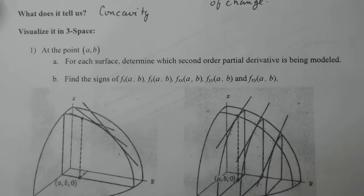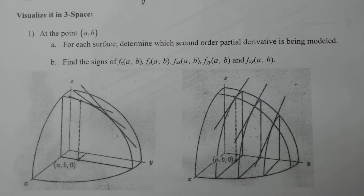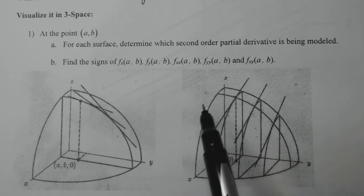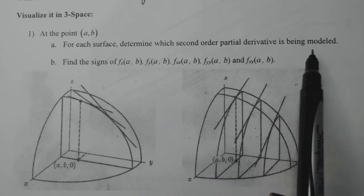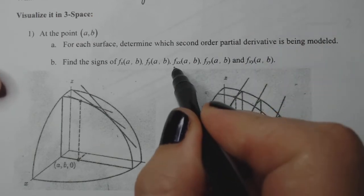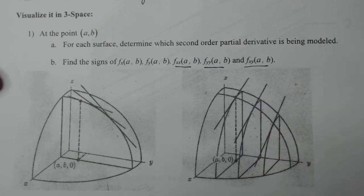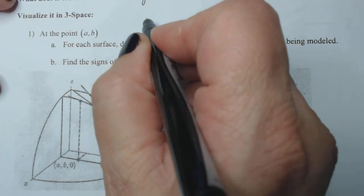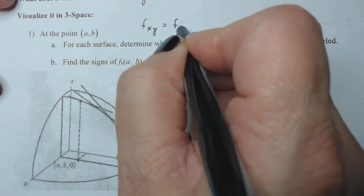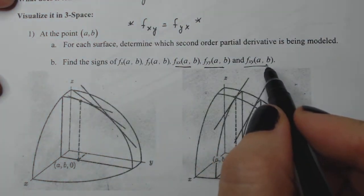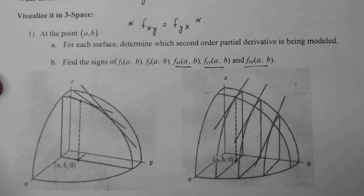Here we have four pictures of second partial derivatives. At each of these points a, b, we want to determine which second-order partial derivative is being modeled. There are four of them: f_xx, f_yy, f_xy, and f_yx. Right off the top — no matter what you're doing, f_xy will always equal f_yx. That's a big thing to remember. So we're only looking at three of the four, but there are actually four of them.